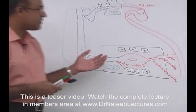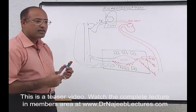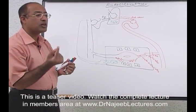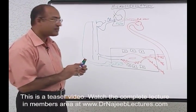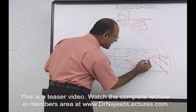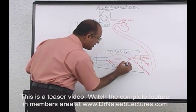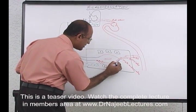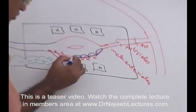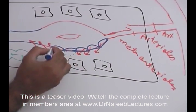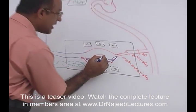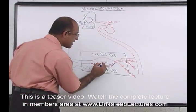Microcirculation by definition consists of vascular channels which are only one cell thick — that is, they are lined by endothelial cells. Microcirculation has capillaries, and these capillaries are lined by endothelial cells.